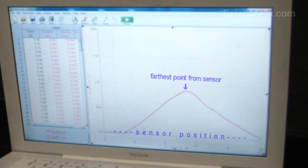Now the bottom of the line graph is the position of the sensor. You can see the further away the line gets from that bottom point, that's the further away the skateboard was. So students can easily see the change in position over time.